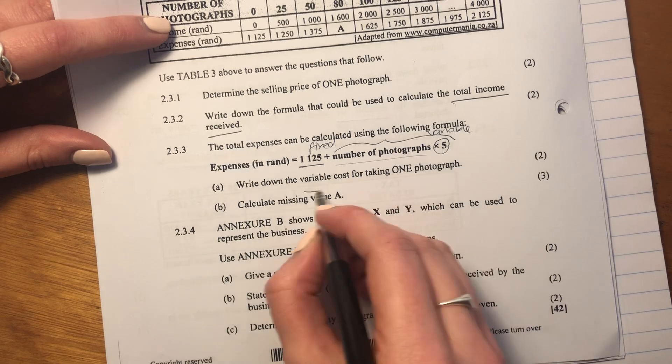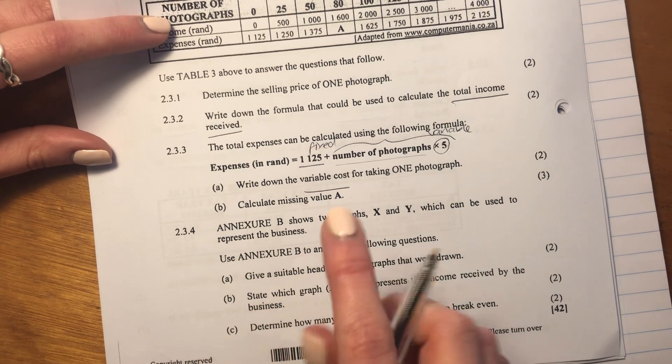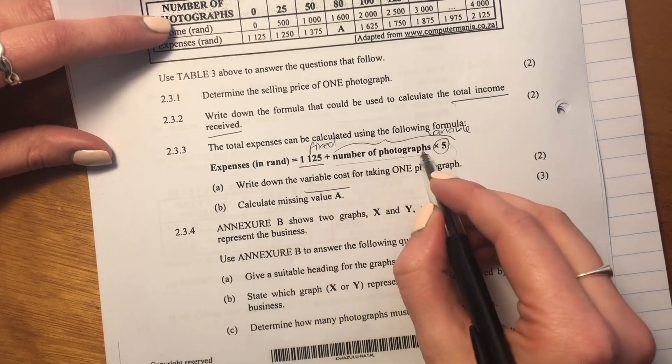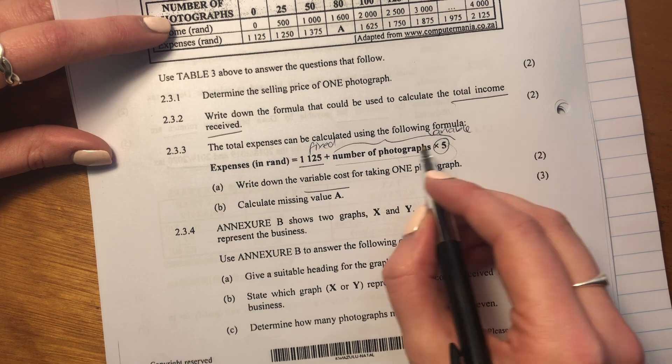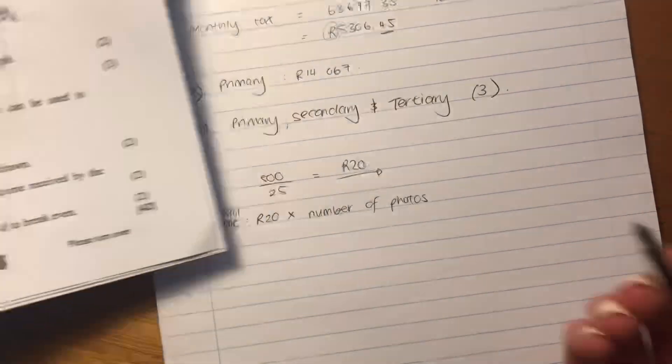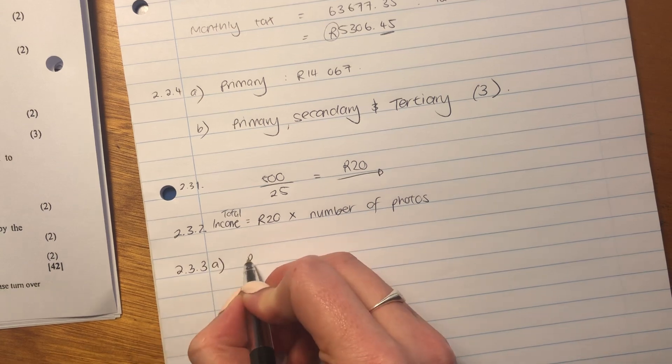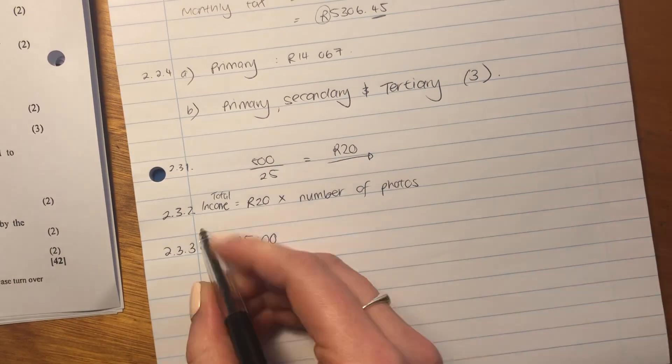Then it says write down the variable cost of taking one photograph. If it's just the variable cost, we're only looking at this. If the number of photographs is 1, it would be 1 times 5. What is 1 times 5? It's just 5 rand. So the variable cost of one photograph is 5 rand.